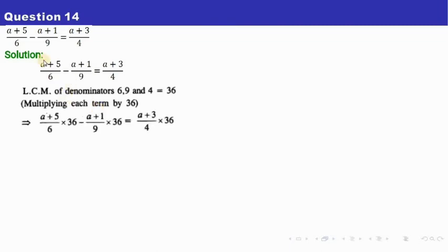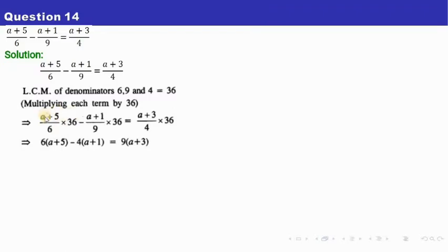Multiplying each term by 36: this into 36, this into 36 equals this into 36. So 6 and 36 cancel 6 times; 9 and 36 cancel 4 times; and 4 and 36 cancel 9 times. So we have 6 into (a + 5) on the left hand side, then 4 into the next quantity, and 9 into the last term.